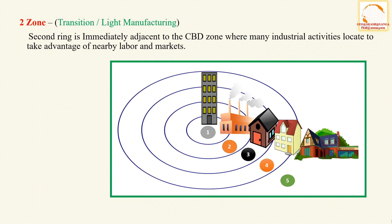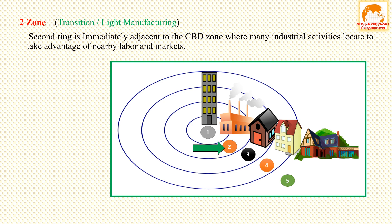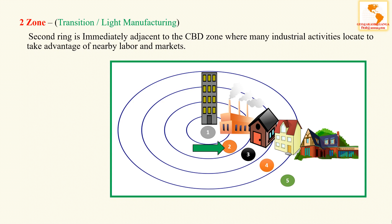The second ring is the zone of transition or light manufacturing, immediately adjacent to the CBD, where many industrial activities are located to take advantage of nearby labor and markets. Most transport terminals — mainly port sites and railways — are located adjacent to the central area. This ring also contains slum areas occupied by lower-income social groups who work in the CBD.